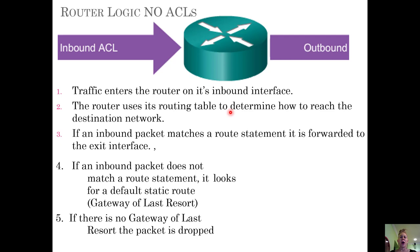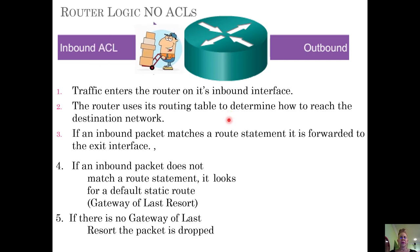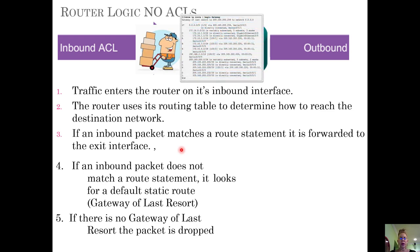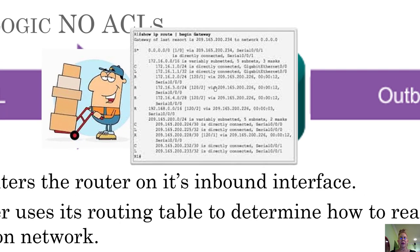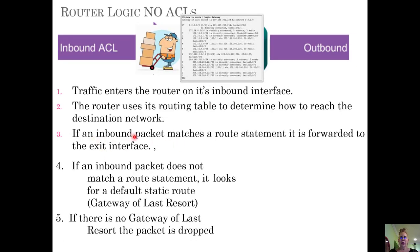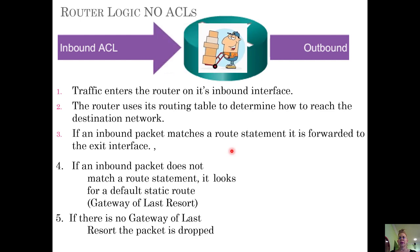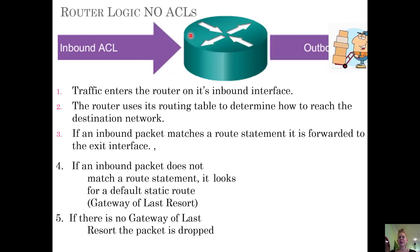So let's look at the logic behind packets coming in. The traffic enters a router on its inbound interface, and the router uses its routing table to determine how to reach a destination network. But first, the interface is checking that packet. In this scenario there is no ACL, so the packet is compared to the routing table. If the inbound packet matches a route statement, it gets forwarded to the exit interface. In this scenario there is also no access control list, so it just goes right out.